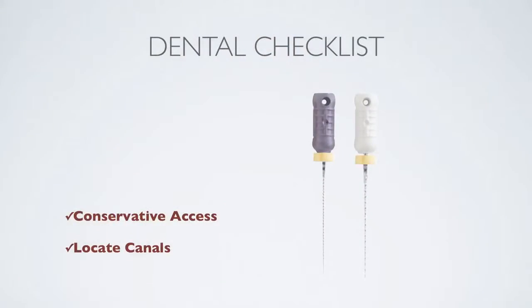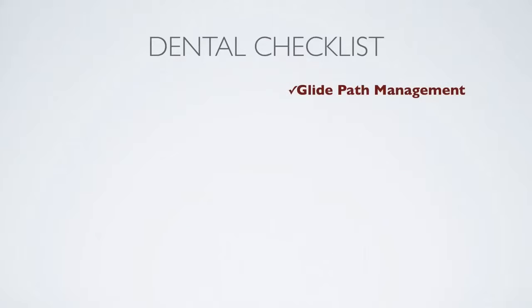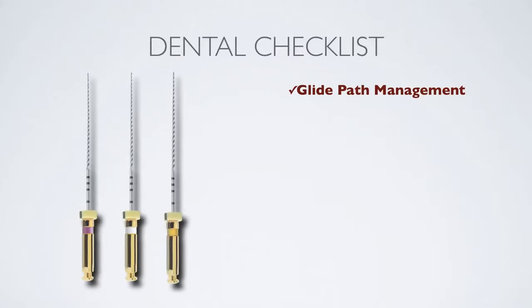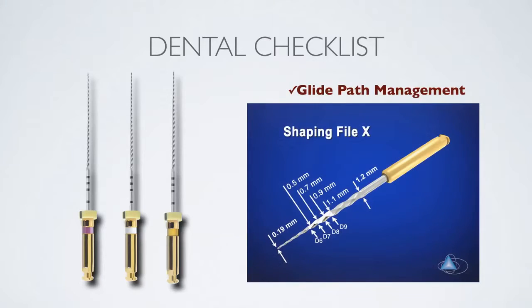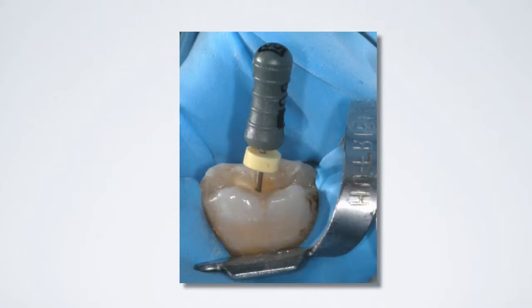After locating the canals, my objective is to get to working length as efficiently as possible. Once I have confirmed working length with a 10 or 15 hand file, I initially pre-enlarge the canal with the path files numbers 1, 2, and 3, and then enlarge the orifice with an orifice opener such as a ProTaper SX file. By this time I've created straight-line access, which I can confirm by looking at my file's position in the tooth.